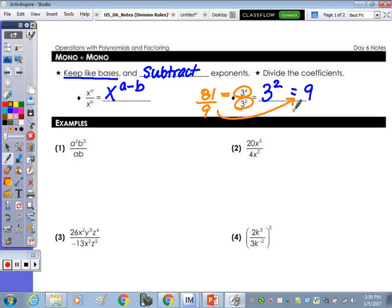So number one, we're going to take a squared b cubed and divide it by ab. You have to focus on those like bases. So divide the a squared by a, and what do we get? There's a 1 there. So keep base of a, and 2 minus 1 is just a, or a to the 1st. And b cubed divided by b to the 1st would be b squared.